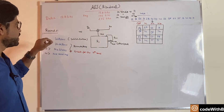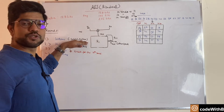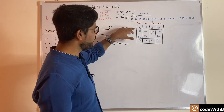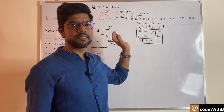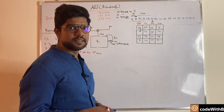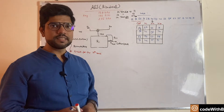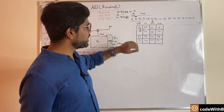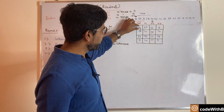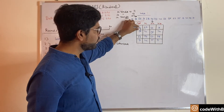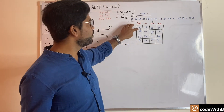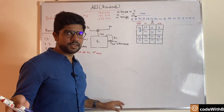Now let's talk about sub-bytes. The sub-byte step is the substitution of bytes: whatever value we have here will be replaced by some other value. For that replacement we need a lookup table, also called the S-box. In the AES algorithm every block represents one byte, so whatever byte we have here needs to be replaced with another byte.